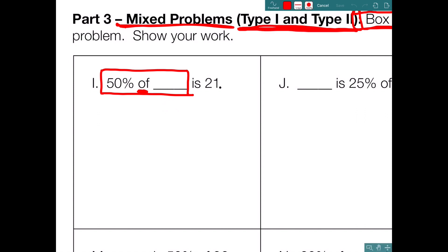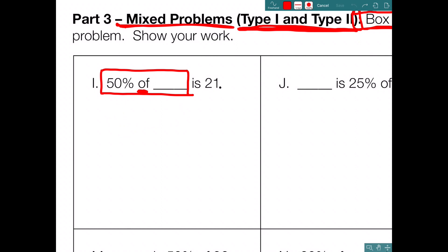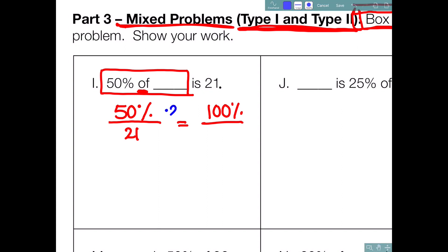Let's solve using a proportion, then check with a bar model. Proportion: percent over number equals percent over number. Rereading: 50% of blank is 21. Write: 50% is 21. We want what 100% is. How many times does 50% fit into 100%? It fits 2 times. Times 2 in numerator, times 2 in denominator: 50% times 2 is 100%, 21 times 2 is 42. So 50% of 42 is 21.